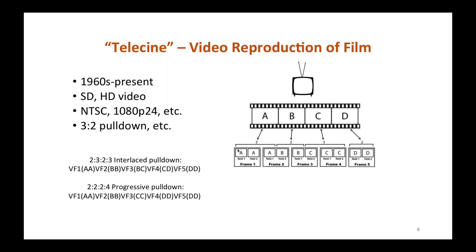Prior to film scanning, there was and still is the process of converting film images to video, commonly known as telecine. While this process provides access to film content on video-centric display devices such as televisions, the characteristics intrinsic to video — such as frame rate, color space, and resolution — make telecine a subpar process for archiving and preservation. For example, converting film at 24 frames per second to NTSC video at 29.97 fps requires adding composite and duplicate frames and fields, as well as complex cadences for high-definition interlaced and progressive video formats.